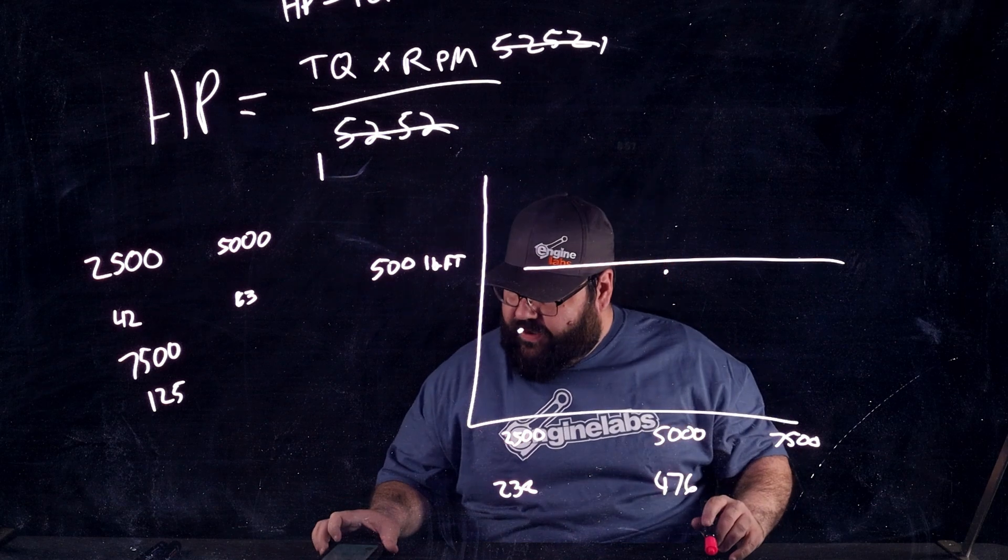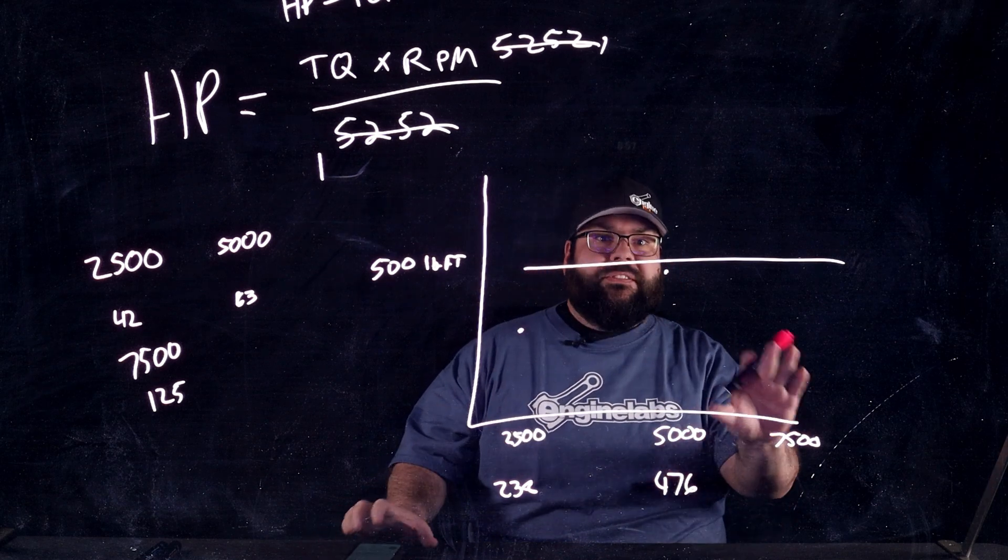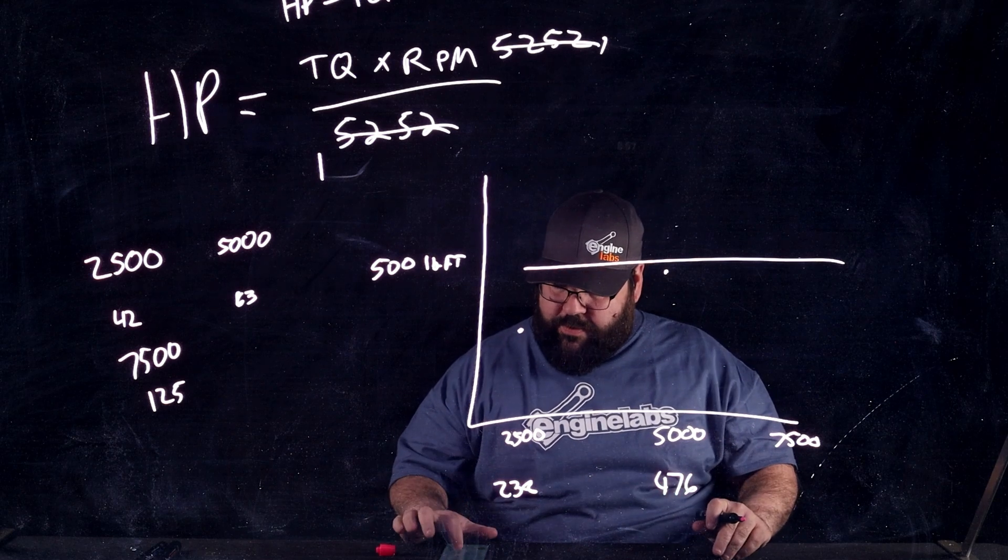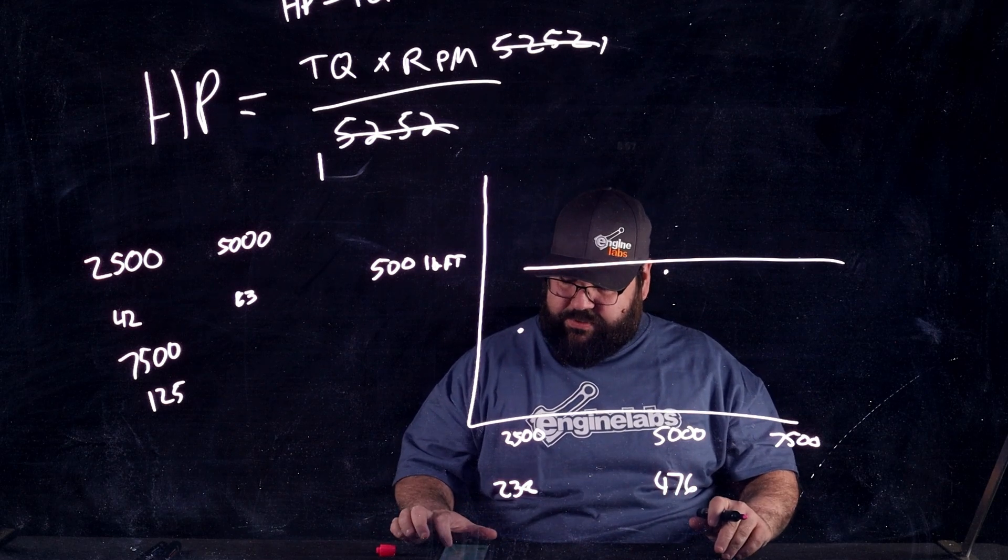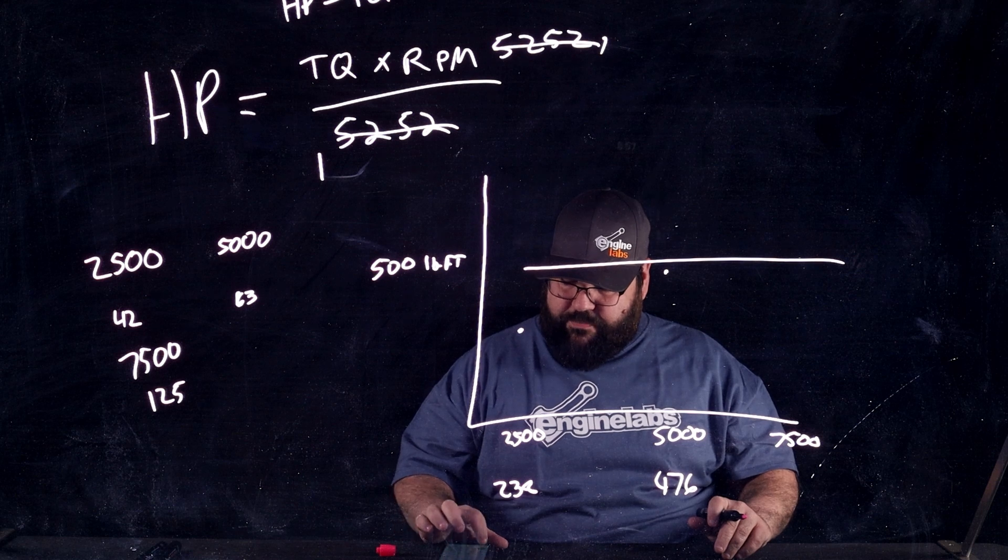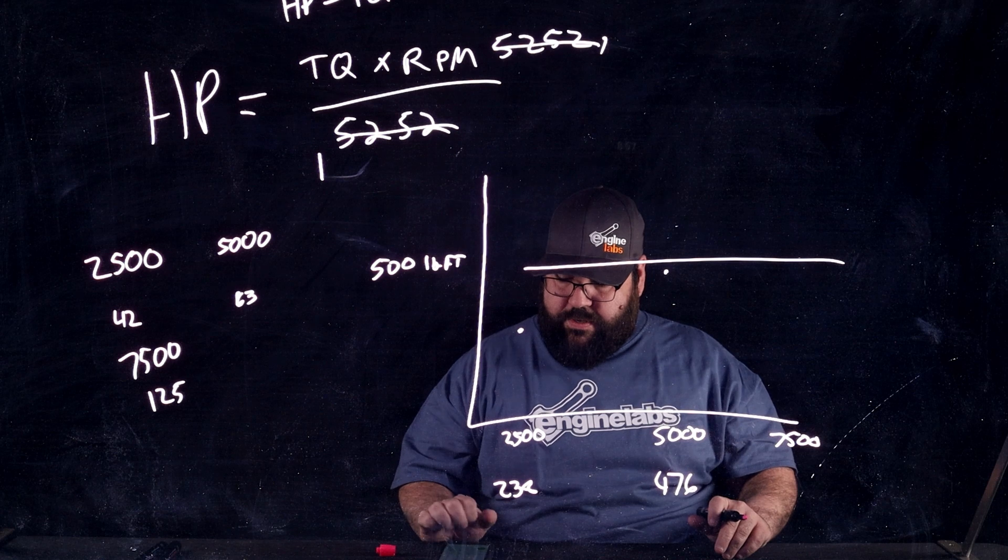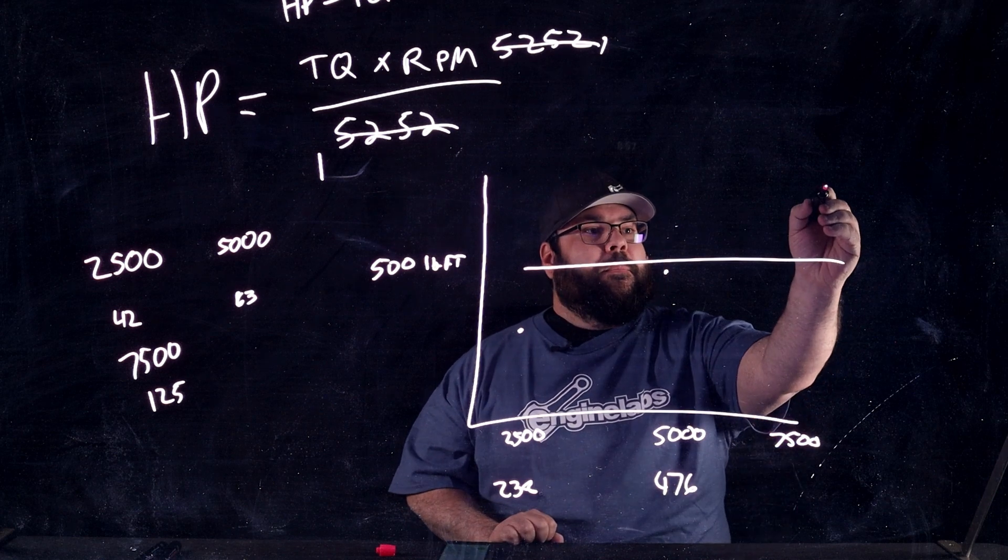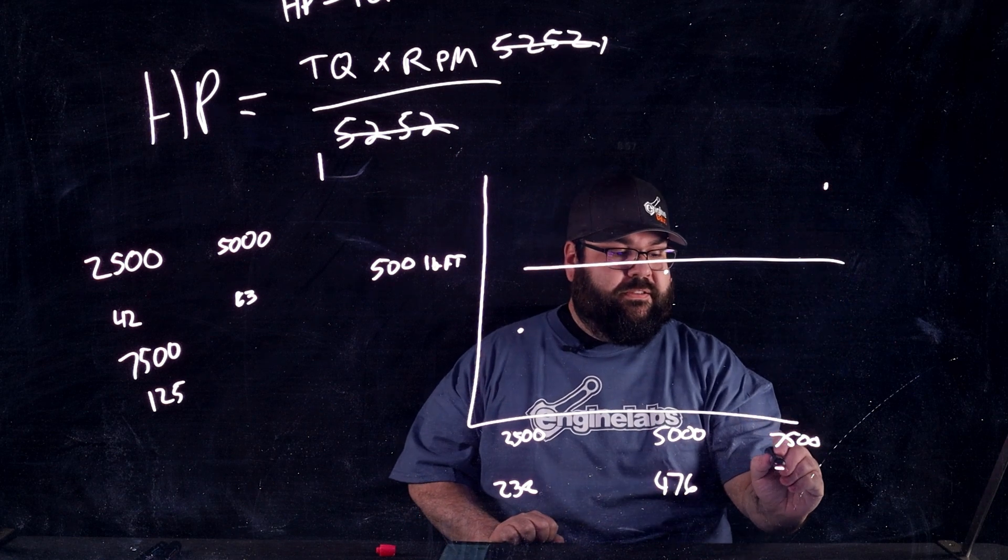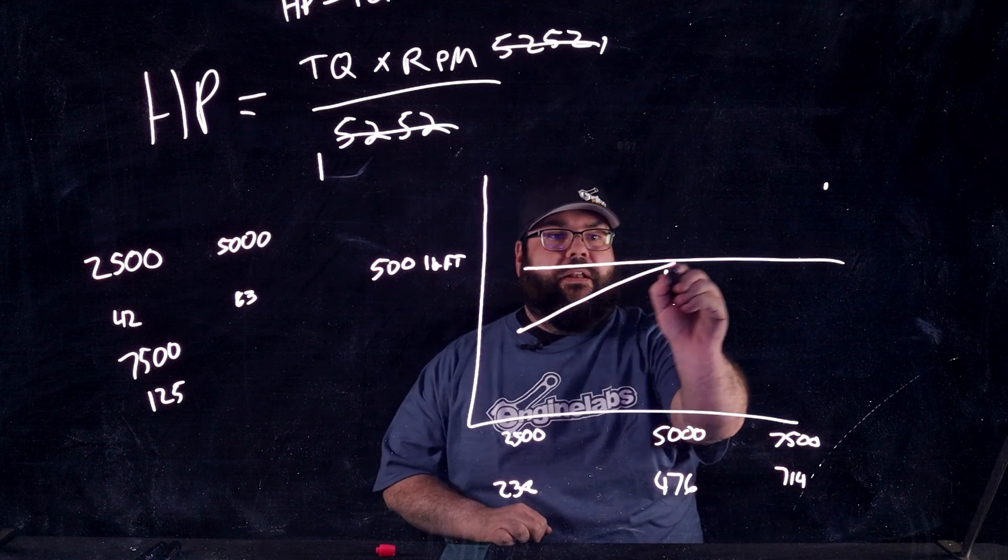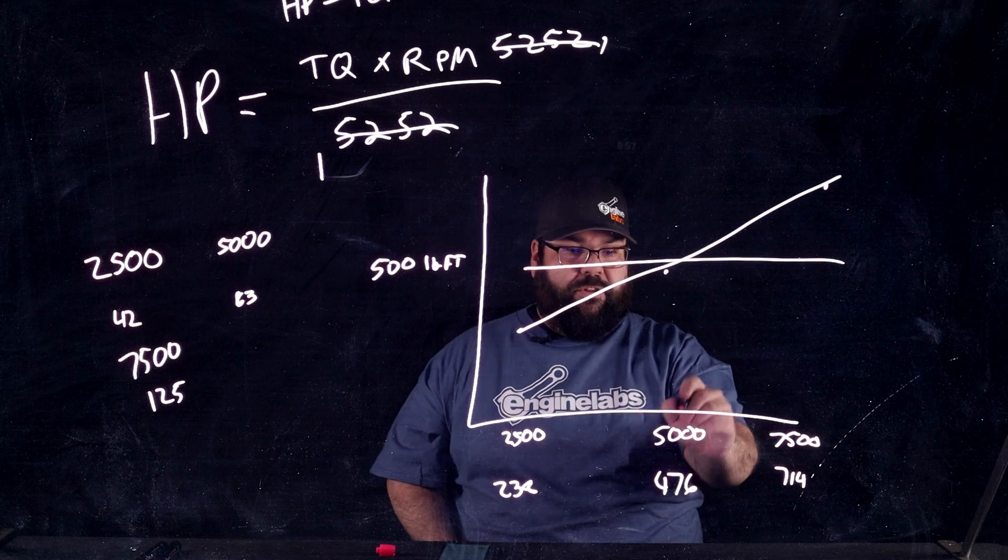So, now at 7,500, what did we say? We figured this is going to be 50% more. So, let's go ahead and do it. We're going to go 500 pound-feet of torque times 7,500 RPM divided by 5,252. And now we have somewhere up there, 714 horsepower. Look at that. Nice straight graph. And look where it crosses.